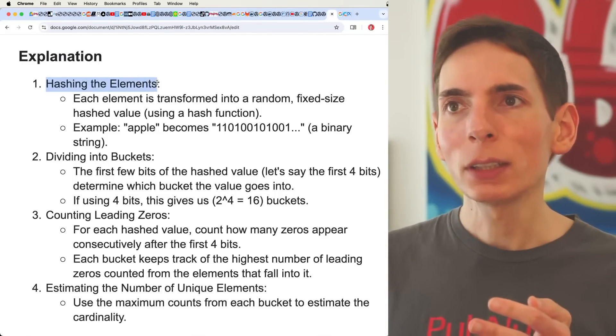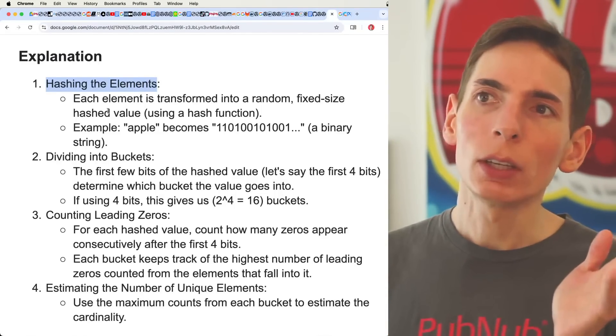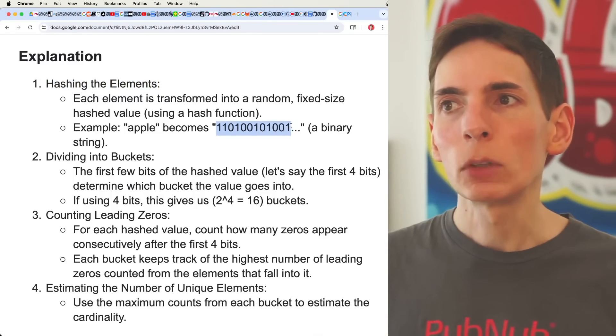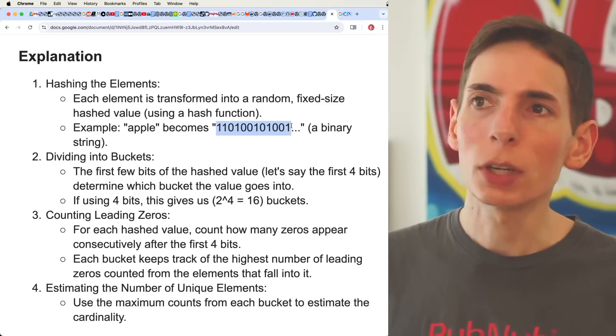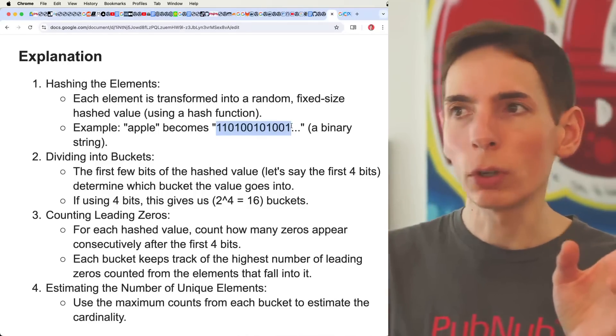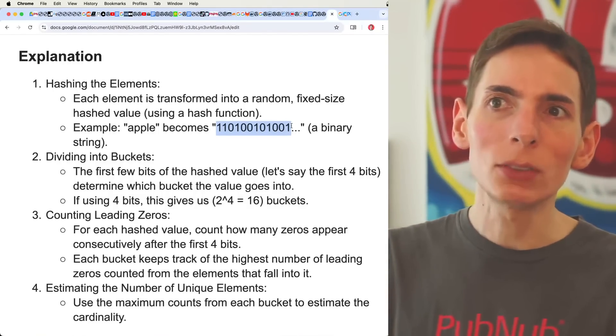Let's just walk through here the steps. Hashing of the elements - this is we are going to take a word and convert it into ones and zeros using a hash algorithm, which has a consistent output. Takes the word and turns it into a string of ones and zeros. Easy peasy, that's step one.